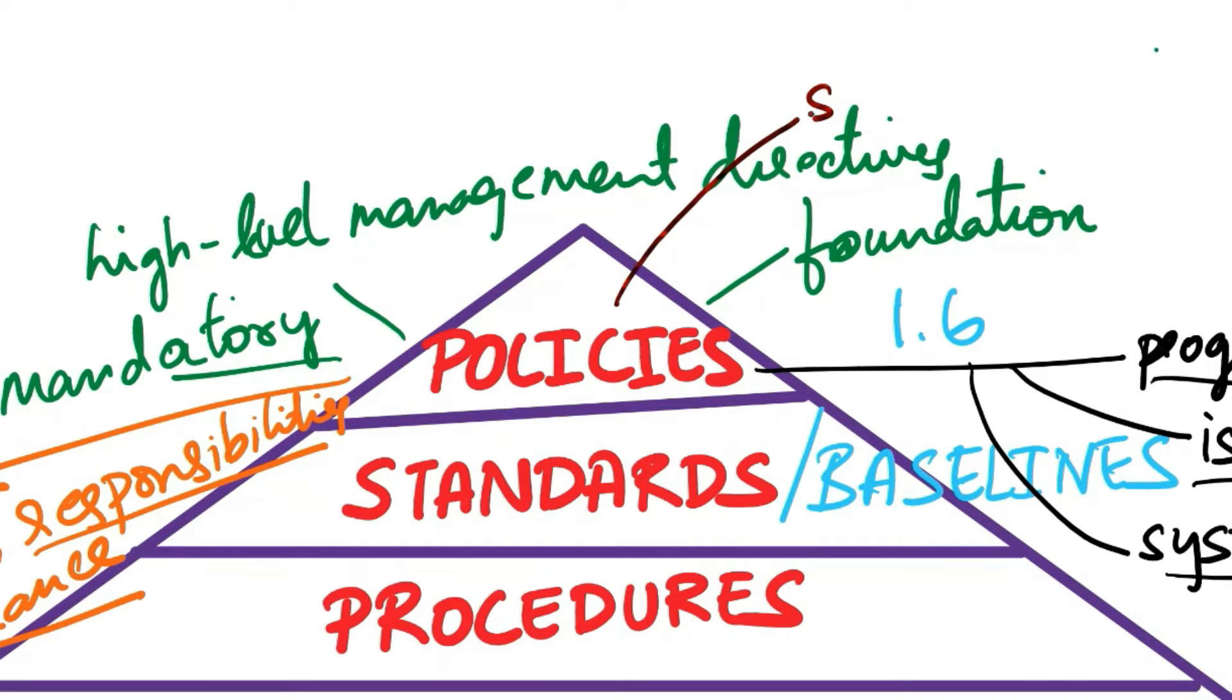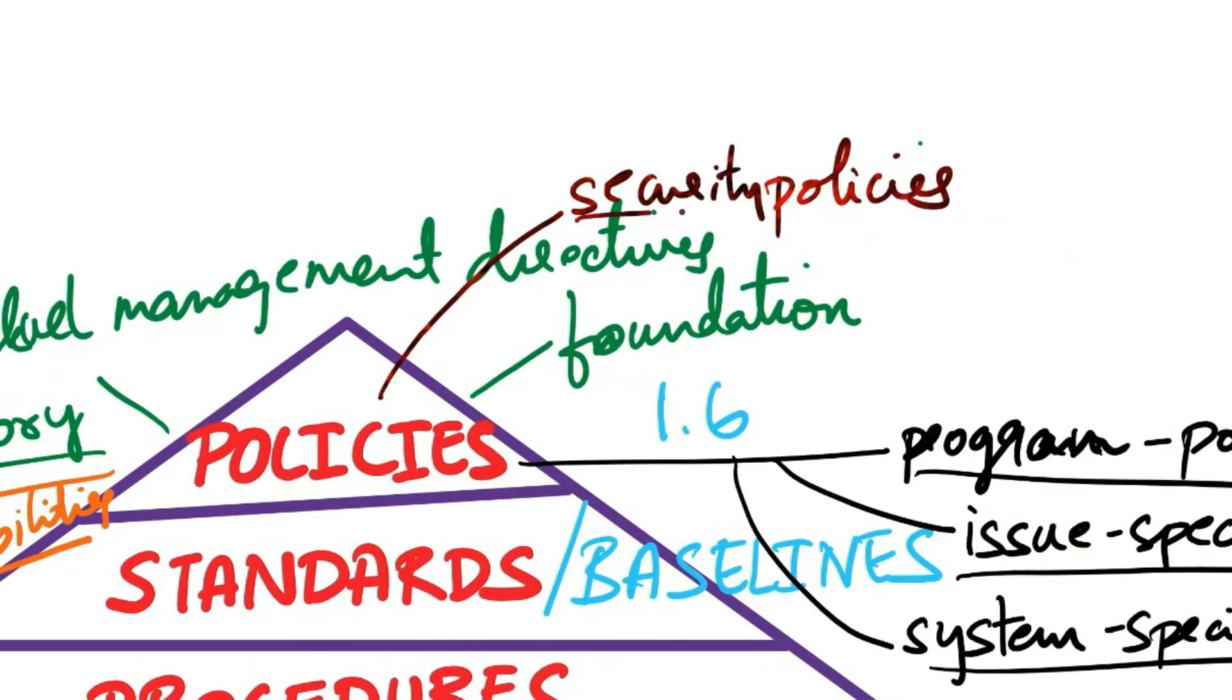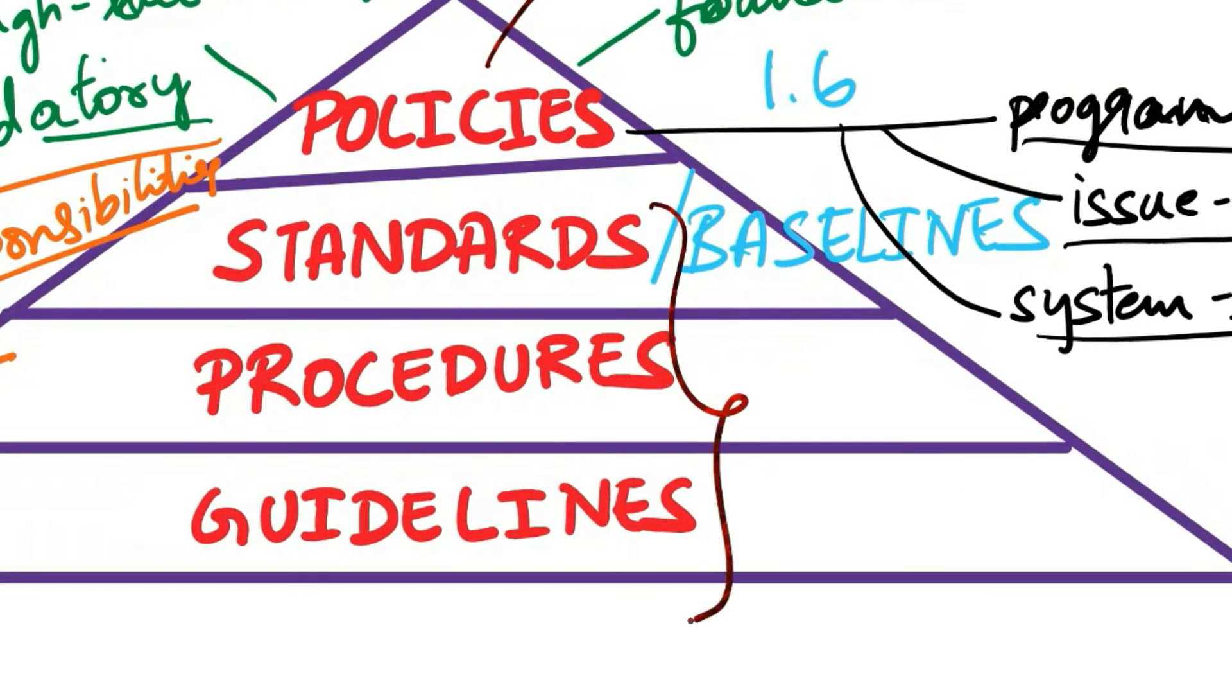Now, we will talk about security policies. Security policies as part of internal governance represent the requirements imposed by senior leadership on the security management program. They provide direction and dictate requirements for organizational personnel. Policies are formal statements establishing principles to guide decisions and actions, while standards, procedures, and guidelines support and detail the implementation of policies.